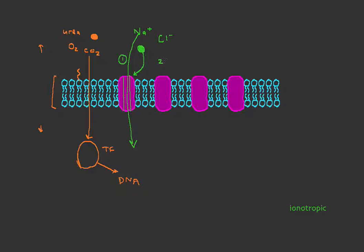Now the second one is part of a class of receptors that are called metabotropic receptors. And we'll start with the RTK, or receptor tyrosine kinase.